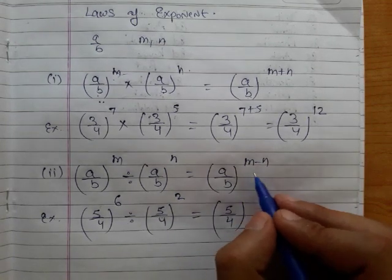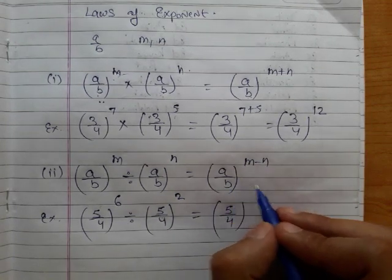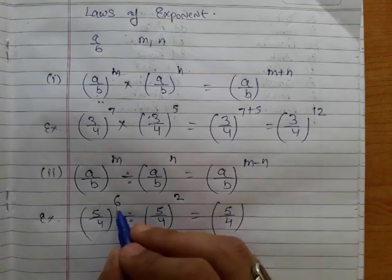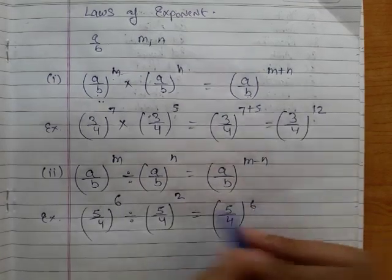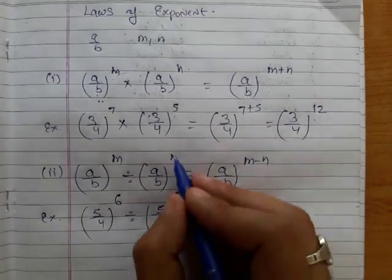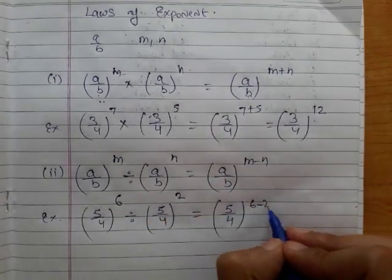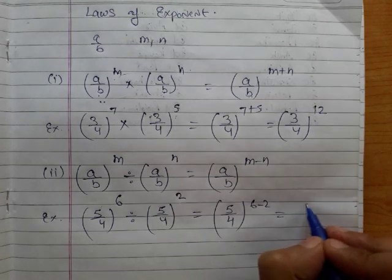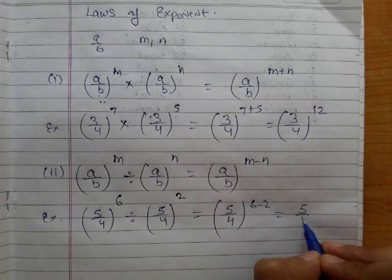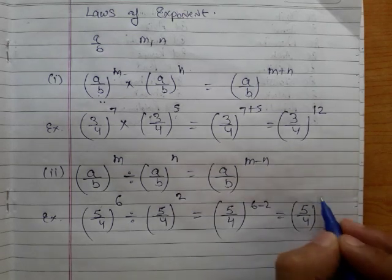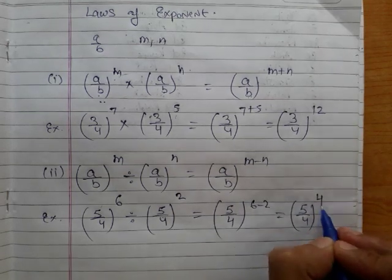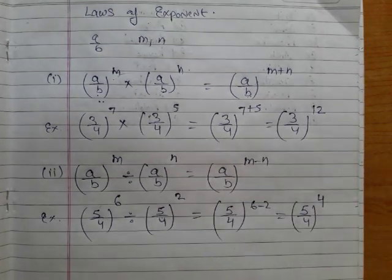We subtract m minus n, that is 6 minus 2, where n equals 2. So 6 minus 2 gives us 5 over 4 raised to the power 4.